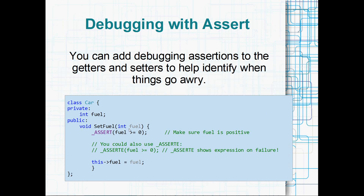Debugging with assert is similar to validating input. If you're validating things during the debugging process, you might like to use assert to make sure certain conditions are true. You can put your assert in a setter — something like assert fuel >= 0. Whenever you're debugging, if somebody attempts to set fuel to a negative value, you're going to get an assert failure and you can fix that problem. Debugging with assert is a good use for a setter.